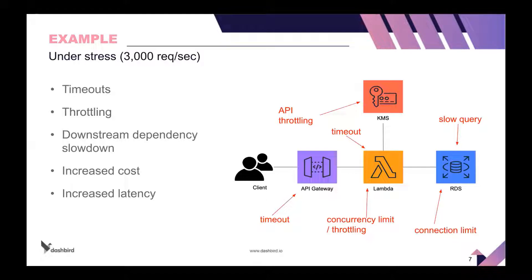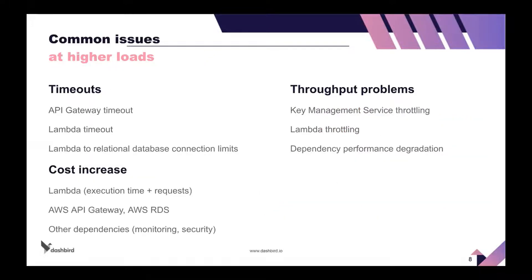Looking at this architecture, pretty much every service here has some sort of limit that, when you reach some scale, might affect you and cause a failure or performance degradation in the chain. Different services have different API limits and different throttling limits. Any kind of resource can fail for different reasons — configuration mistakes, code failures, code errors — and there are a lot of different failure scenarios in a distributed serverless architecture. The common issues we see at scale are timeouts — and I'm not talking about code exceptions, but things you run into specifically at scale.